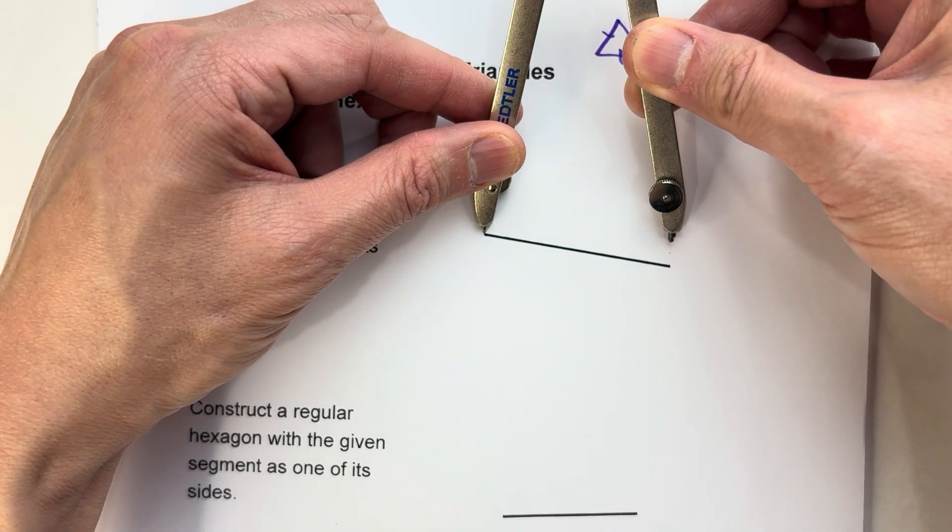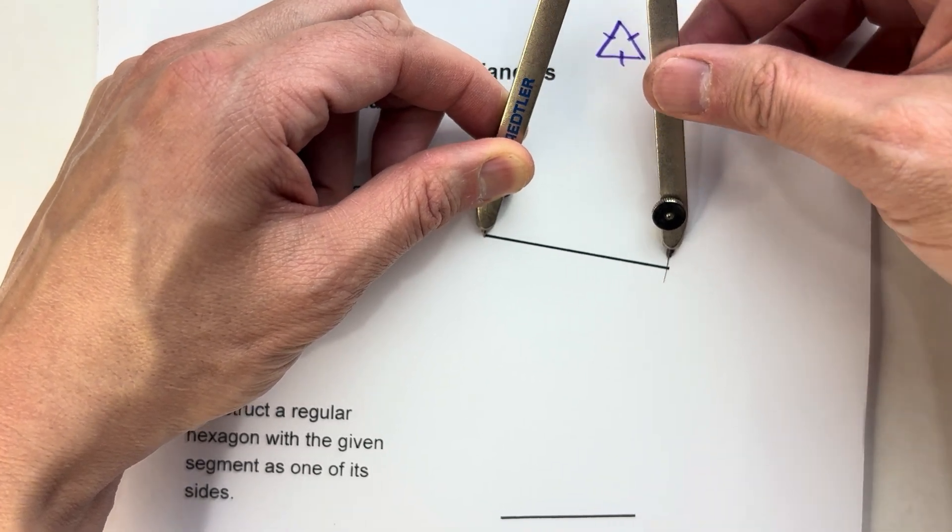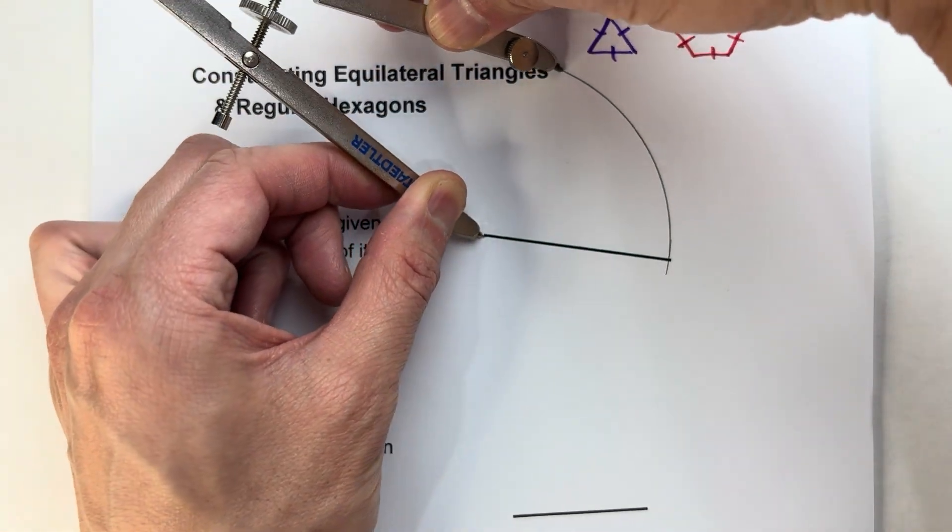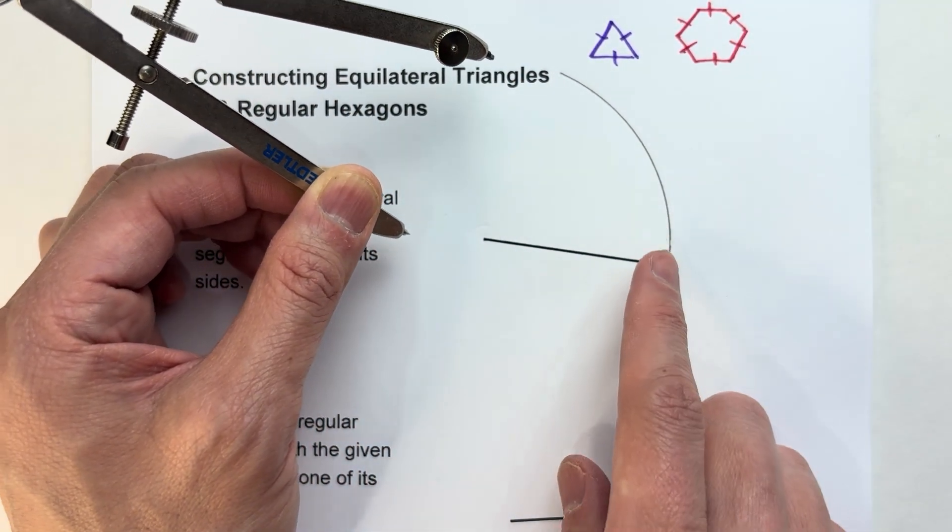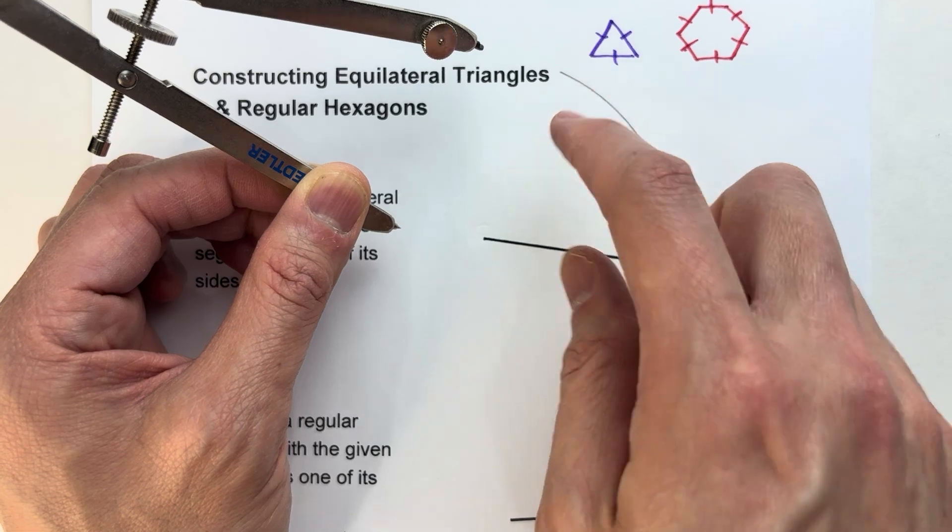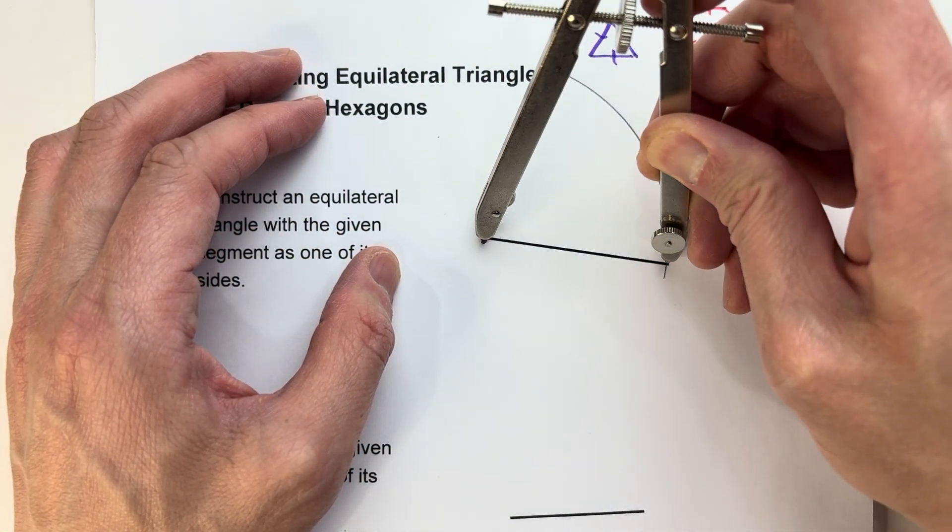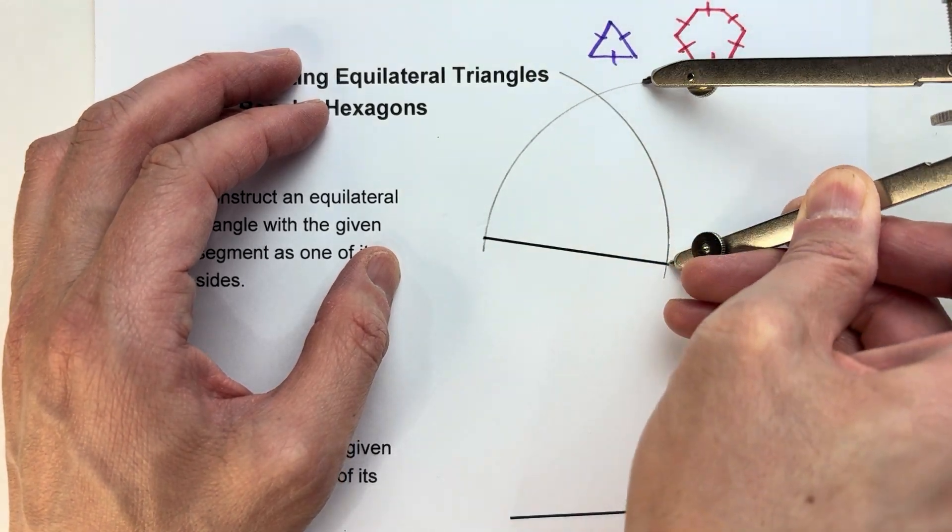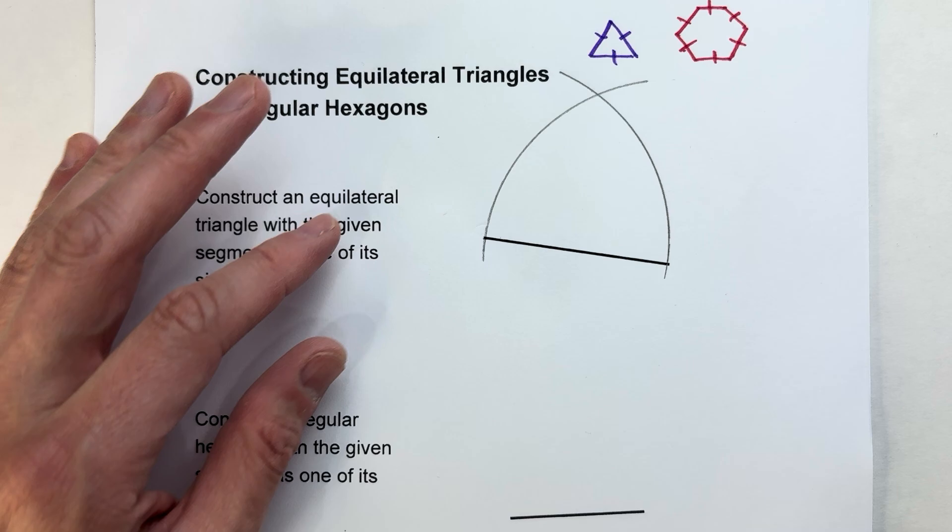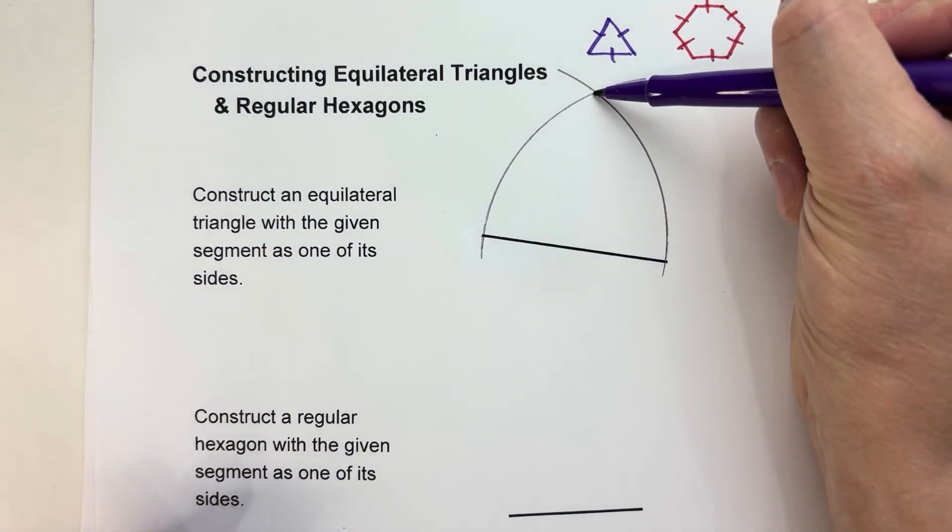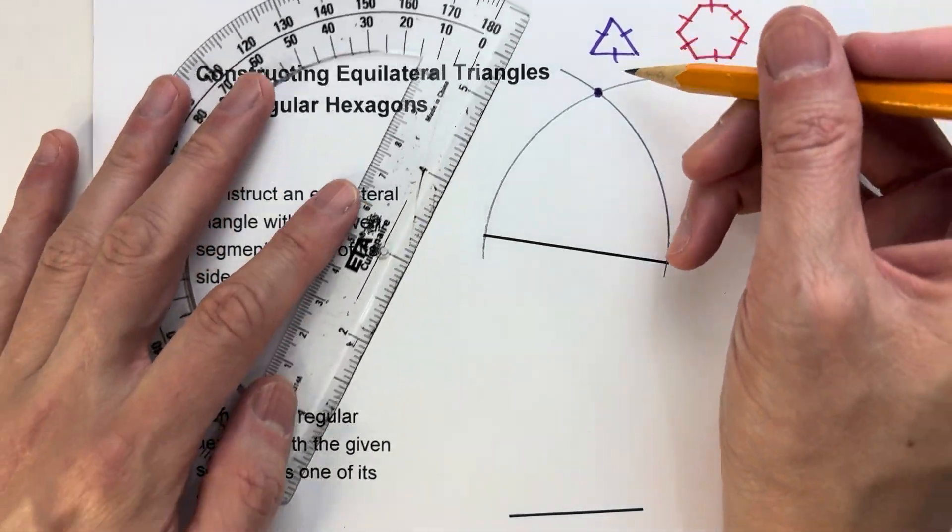Now I'm going to take this distance and from here swing an arc that's the length of the segment up to try to figure out where this side is going to go. Now I'll take that same distance and from the other side of the segment swing an arc also. The place where those two arcs intersect is the one place where those two sides are going to meet up.